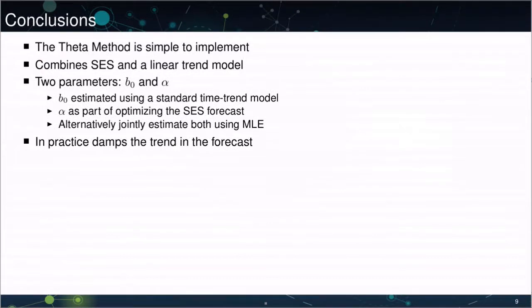This lecture has introduced the Theta Method, which in practice is simple to implement. It combines a simple exponential smoother with a linear time trend. There are two key parameters, b0 and alpha. One is usually estimated by OLS, the other is estimated using SES, although we saw at the end that it's possible to jointly estimate the two parameters using maximum likelihood estimation.